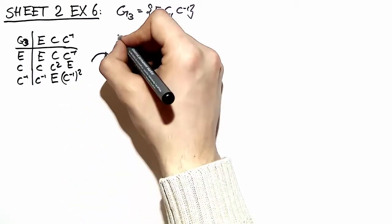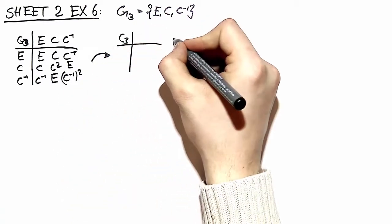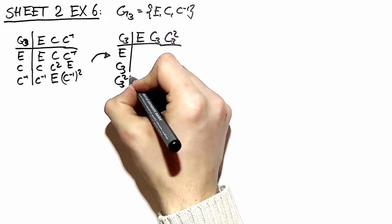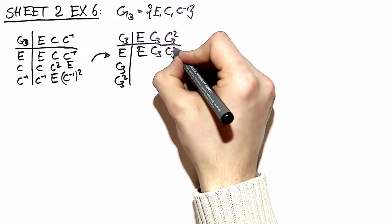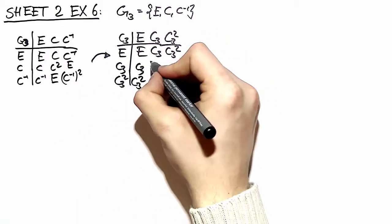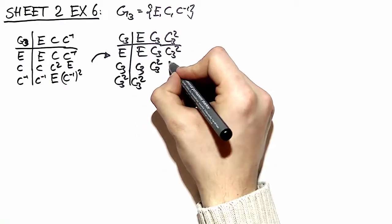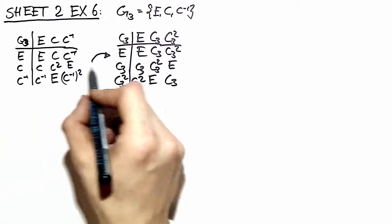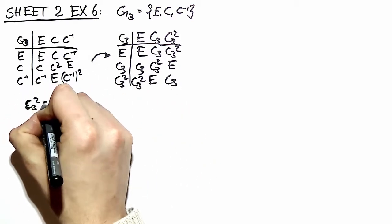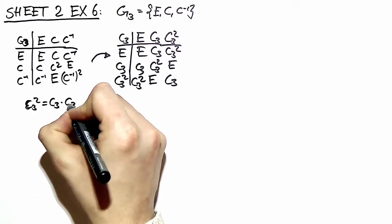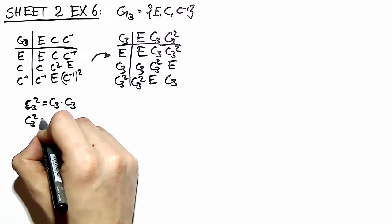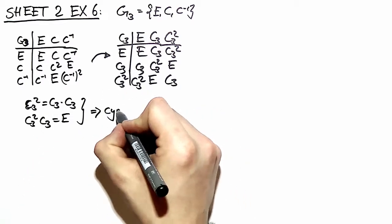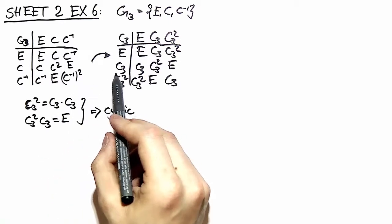Now we can recognize this as being the rotation group C3, because C3 behaves exactly equivalently. Here we have C3, C3 squared, e, C3, C3 squared — and we recognize here C3 squared equals the identity and C3. So C3 squared is equal to C3 times C3, and C3 squared times C3 is equal to the identity. Therefore we have found the generator of our cyclic group, and we see that every element in this group can be generated from C3.